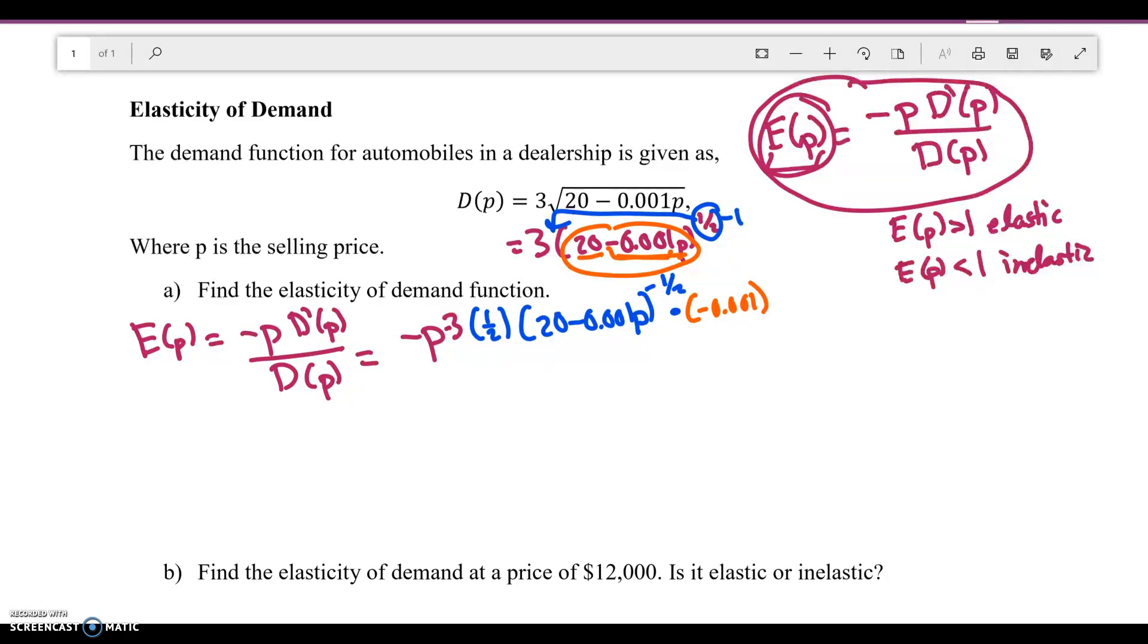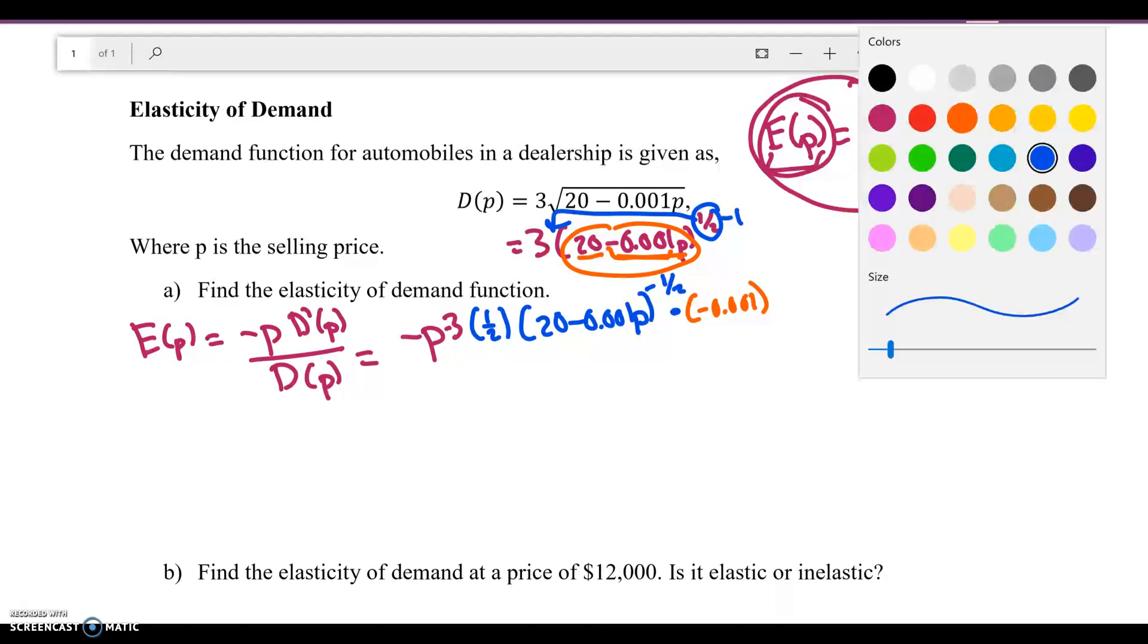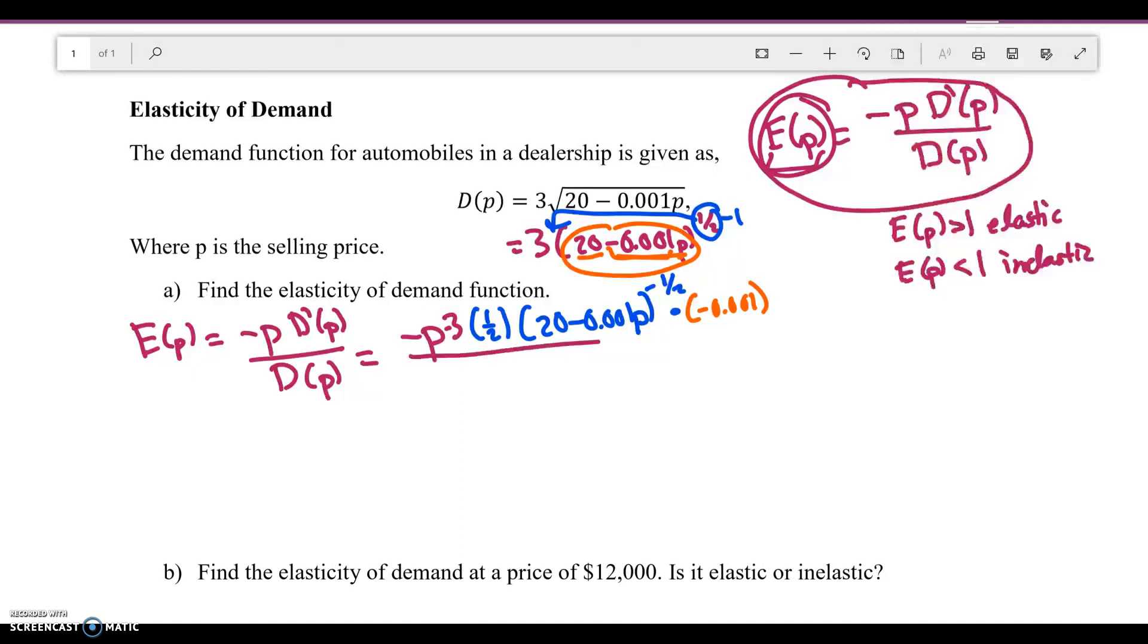Now what am I going to have on the bottom? So it's really terrible on top, but you just have this crazy formula. Let's just simplify this at the end, but let's go ahead and finish this up. This is going to be divided by just D of P, so I'm just going to write down the whole formula again. 3 square root of 20 minus 0.001P.